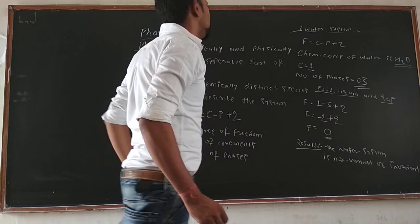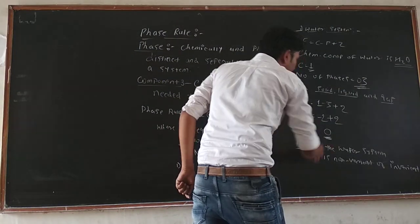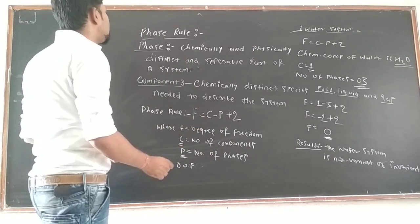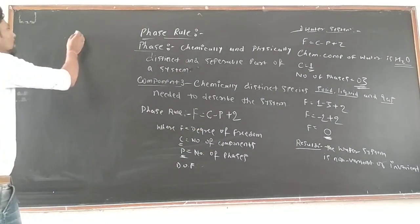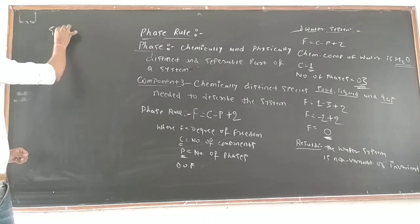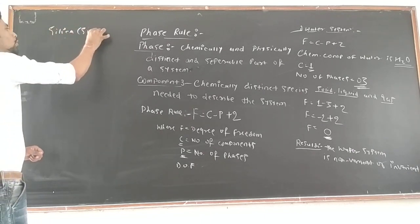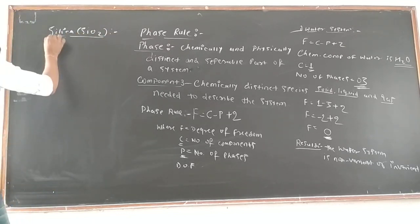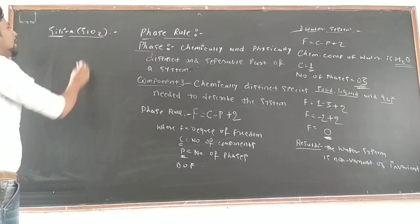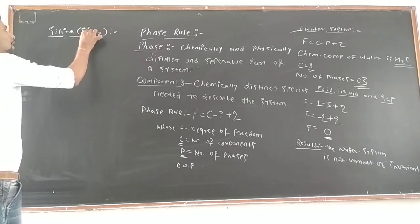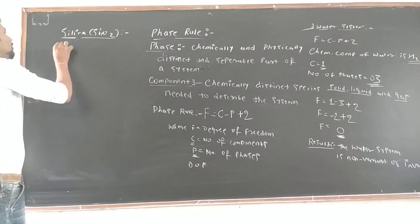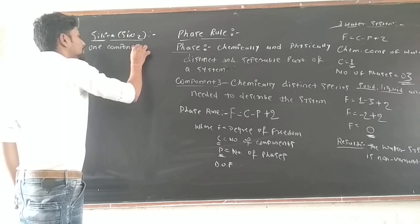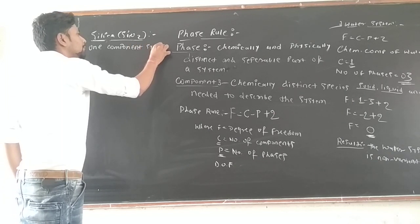This is about the water system and the degree of freedom calculated using the phase rule. We also apply the phase rule on the silica system. The chemical composition of the silica system is SiO₂, which is a combination of silicon and oxygen. The silica system is also a one-component system.